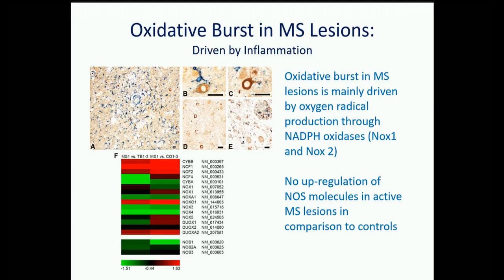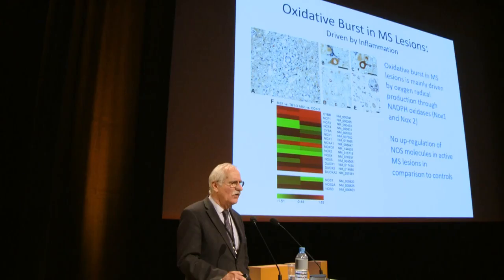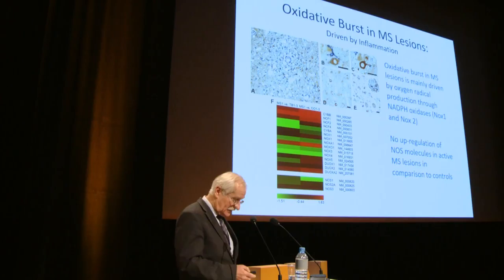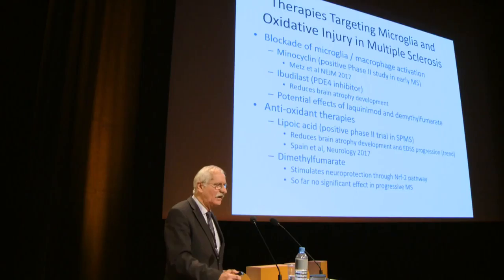Regarding the source of oxygen radicals, gene expression studies showed that the NADPH oxidase complex — the major source of oxygen radicals — is highly expressed in active MS lesions. Pathologically, microglial cells expressing NADPH oxidase embrace with their processes neurons that are brown due to the presence of oxidized phospholipids, demonstrating a direct interaction.